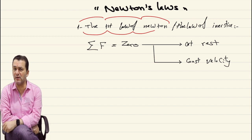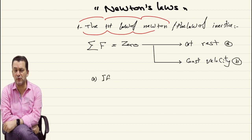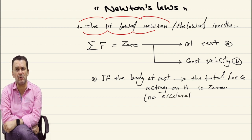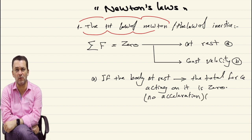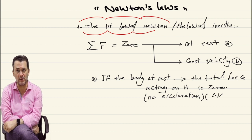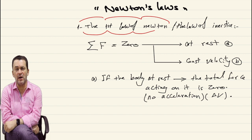If we discuss the first condition, we find that if the body is at rest, it means there is no force acting on this body — that's why the body is at rest. Or we could say there is no resultant force acting on this body. Both options are correct: no force acting, or the total acting force equals zero. If we have many forces acting against each other and they are equal, they cancel each other.